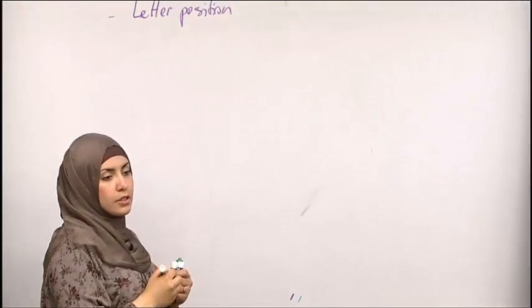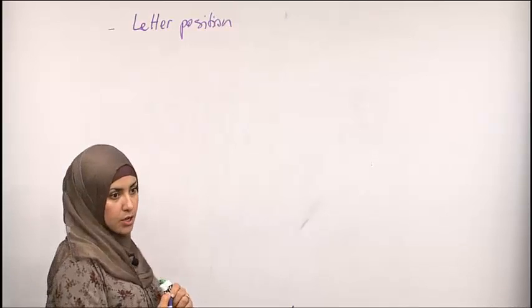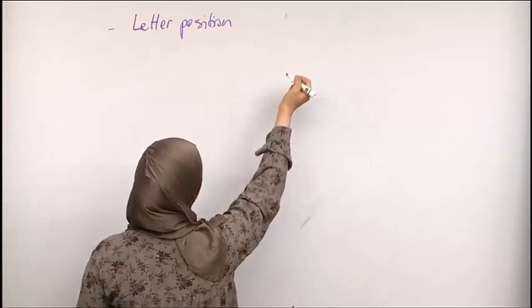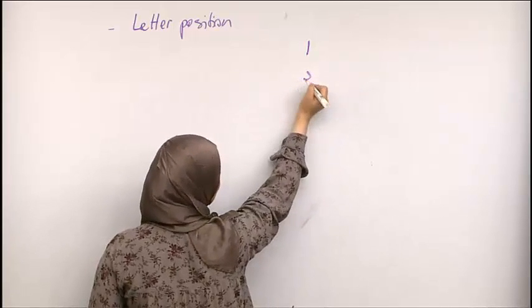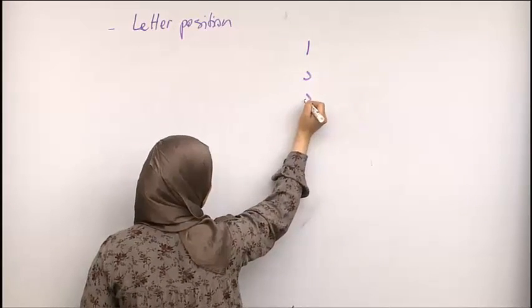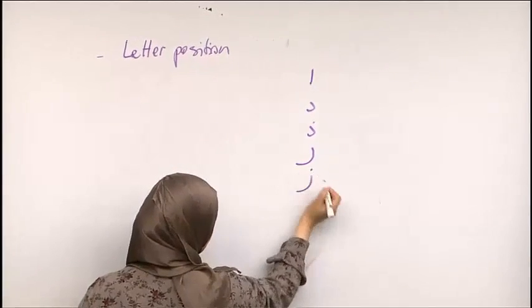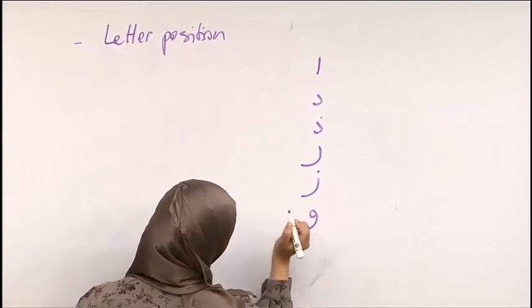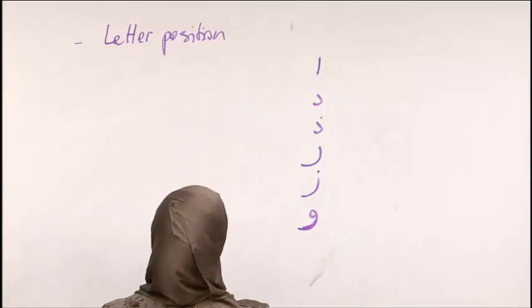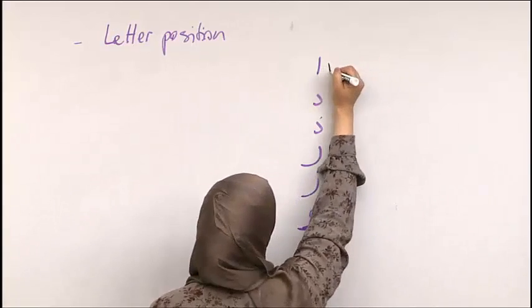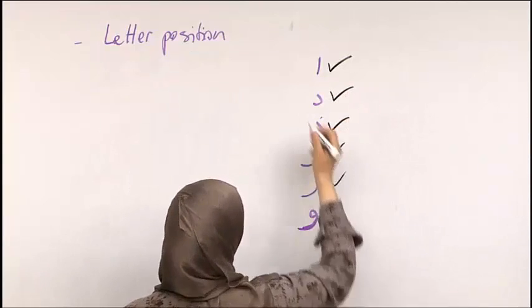What are the letters that you cannot connect from both sides? We have alif, dal, dhal, ra, zayn, and waw. So these we can connect them before, but we cannot connect them after.